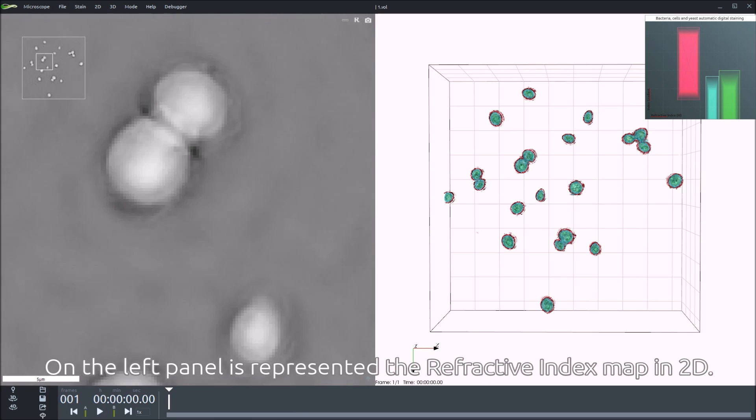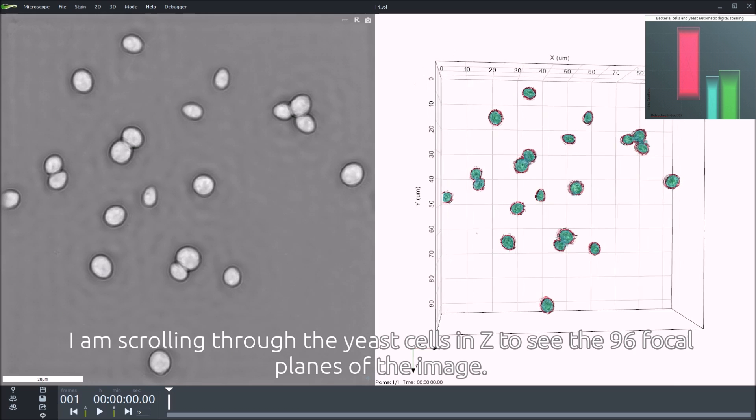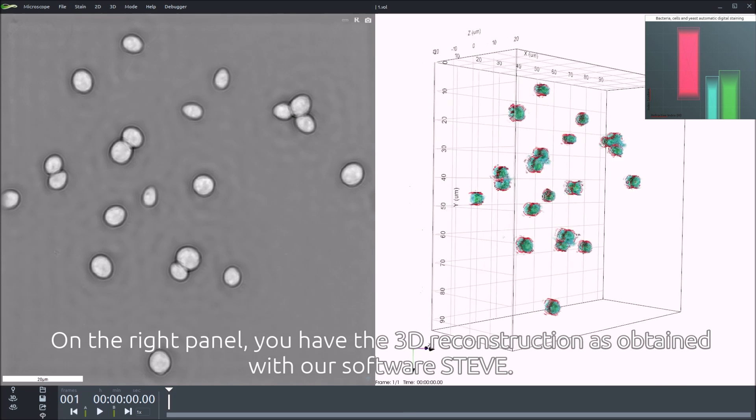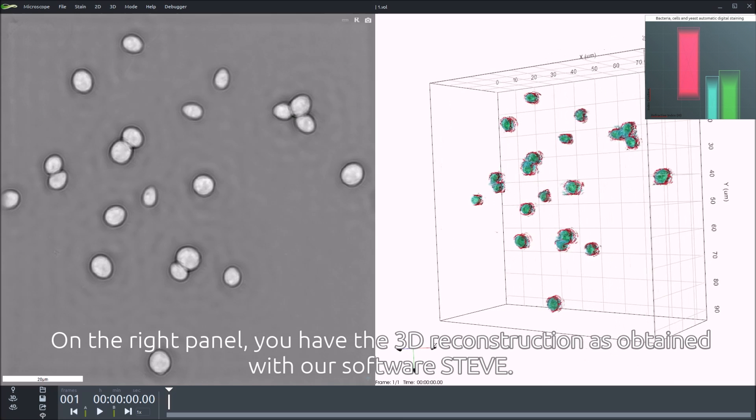On the left panel is represented the refractive index map in two dimensions. I'm scrolling through the yeast cell in Z to see the 96 focal planes of the image. On the right panel, we have the 3D reconstruction as obtained with our software Steve.